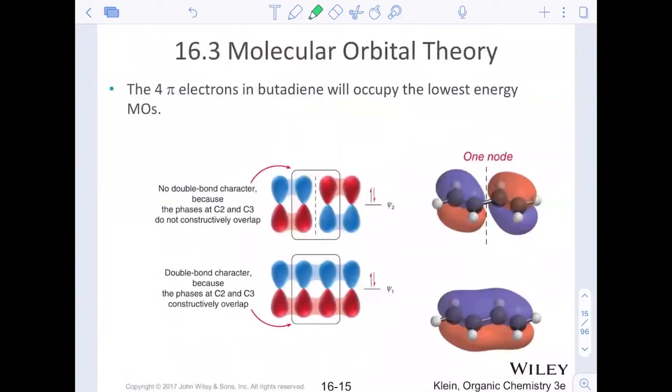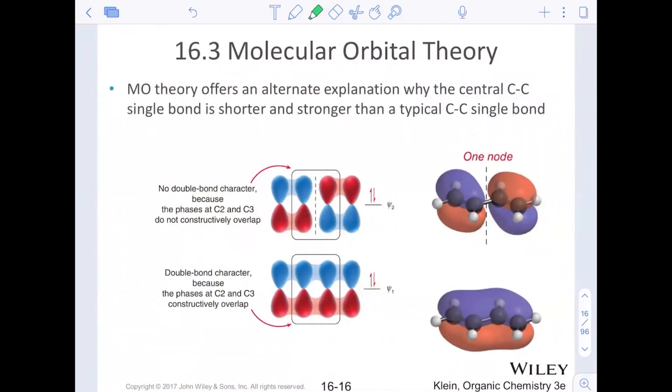The four electrons in butadiene will occupy the lowest energy MOs. We know that the Aufbau principle says build up from the bottom up. And the Pauli exclusion principle says that no two electrons can have the same spin in orbitals. So we do see the half up arrow and the half down arrow in each of these. MO theory just is offering an alternate explanation why the central carbon-carbon single bond is shorter and stronger than the typical carbon-carbon single bond. There is part double bond character we see in this first psi 1, and then there is single bond character in psi 2. So it's somewhere in between a double bond and a single bond for that middle carbon-carbon single bond.